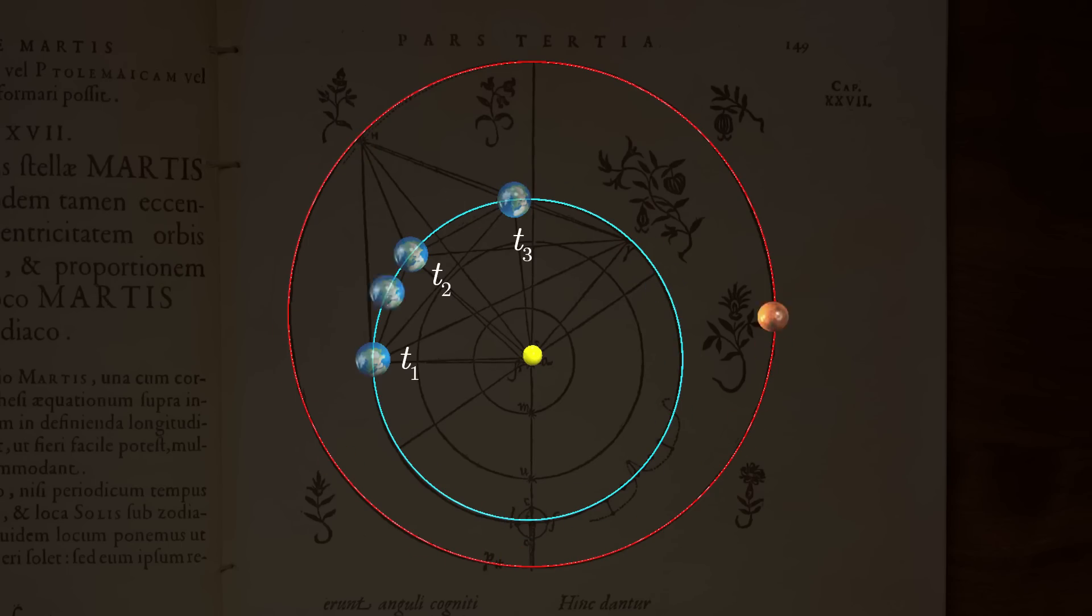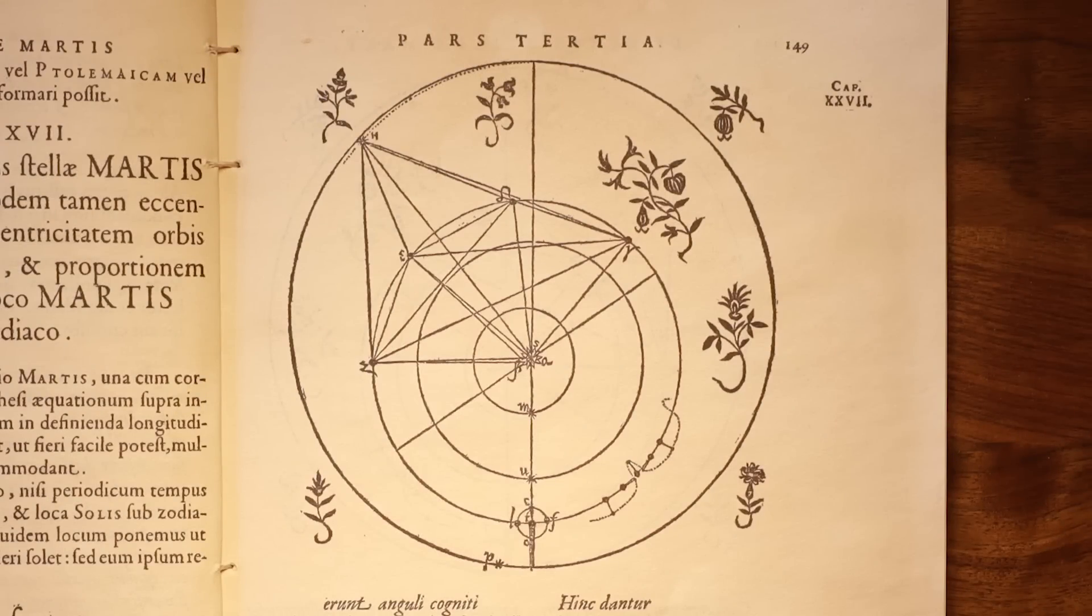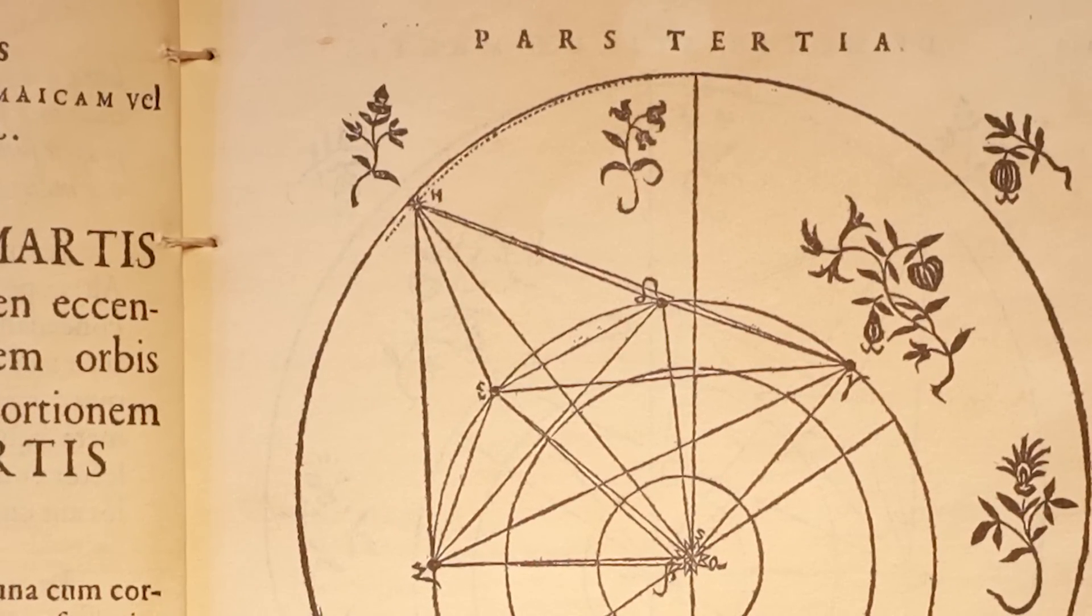From here, Kepler was able to solve for the angles and distances in the triangles formed between the Earth, Sun, and Mars. Using multiple observations with the Earth in different positions allowed Kepler to make his overall model more consistent. Using multiple sets of these fixed Mars observations, Kepler was able to show that the path of Mars did indeed bow inwards and officially rejected the circle.